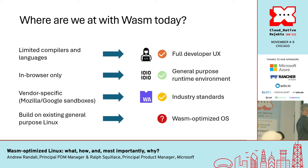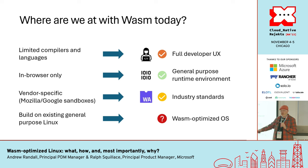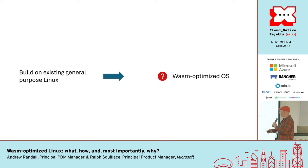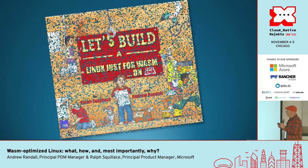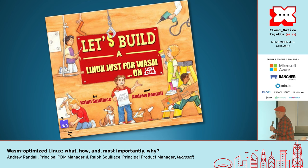This is the point where Ralph called me about six months ago and said there's a gap in the ecosystem — how can we make wasm easier to adopt and build something that just works out of the box as a wasm-optimized OS, the same way CoreOS was a container-optimized OS. So we decided: let's build a Linux just for wasm.